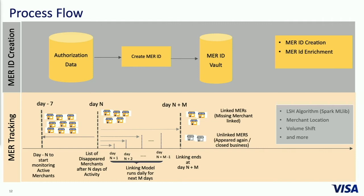At day N, we are able to see which active merchants have disappeared. At that point, our linking process gets started. Every day we try to do this linking, and at the end we are able to say how many of these merchants are linked and how many are unlinked. The reason we do daily linking for M number of days is because when merchants come back into our system, they might take time to bring the volume back to the new acquirer — this window concept really helps in that case. We are using something called the LSH algorithm with Apache Spark MLlib's implementation.